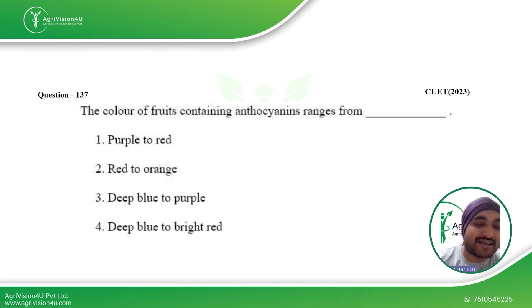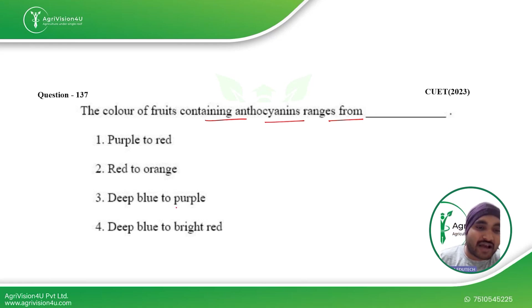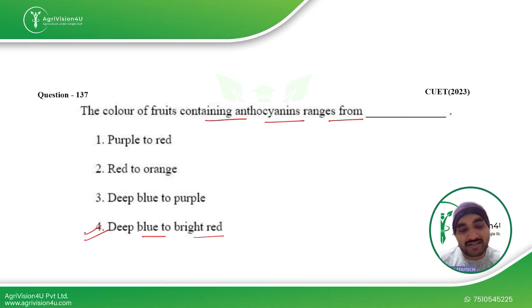The first question is: the color of fruits containing anthocyanin ranges from — as we know, anthocyanin pigments have a blue to bright red color, so the fourth option is the right answer for this question.